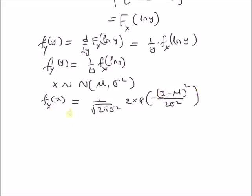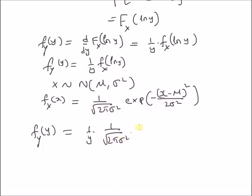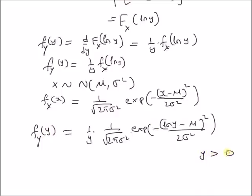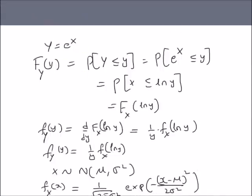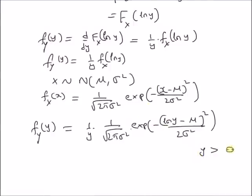Now, from the PDF of a Gaussian random variable and the definition of the derived random variable y, we can derive the log normal distribution as f_y(y) with x as a Gaussian PDF. That is, we have 1/y and the value of this PDF at x equal to log y — that is 1 over square root of 2 pi sigma squared times exponential of minus (log y minus mu) squared divided by 2 sigma squared. This is the log normal distribution, and note that it is only valid for y greater than 0. This is because y equals e power x, which is always a positive value. Therefore, the log normal distribution is only defined for positive real values of y.